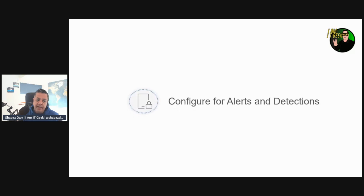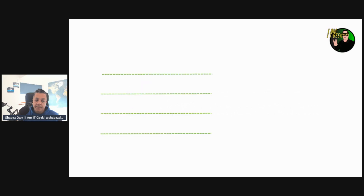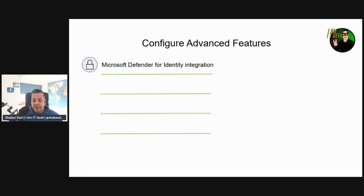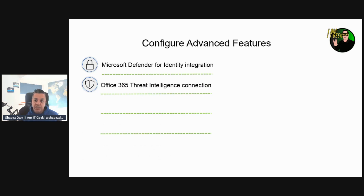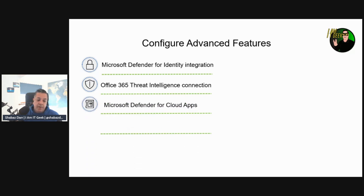Let's talk about configuring alerts and detections, specifically some of the advanced features. Microsoft Identity integration retrieves enriched user and device data from Microsoft Defender for Identity and forwards those signals to Microsoft Defender for Endpoint. The Office 365 Threat Intelligence connection connects Office 365 Threat Intelligence to enable secure investigations across Office 365 mailboxes and Windows devices. Microsoft Defender for Cloud Apps forwards Defender for Endpoint signals to Defender for Cloud Apps, giving administrators deeper visibility into sanctioned cloud apps and shadow IT.